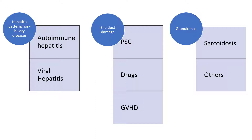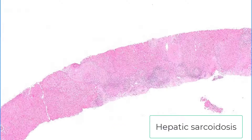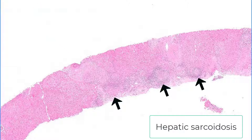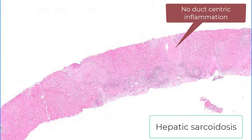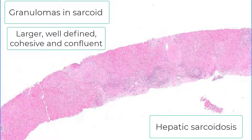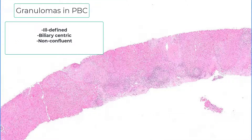The next major category is diseases where you see granulomas in the liver. In sarcoidosis, you see granulomas not only in the portal tract but also in the lobule. Generally the granulomas tend to spare the bile ducts, though occasionally you can have granulomatous destruction of the bile ducts in sarcoidosis. The key difference between PBC and sarcoidosis is that sarcoid granulomas tend to be larger, more cohesive, and coalesce together to form clusters. The granulomas in PBC tend to be less well-formed, biliary-centric, and do not coalesce.